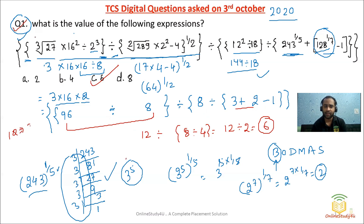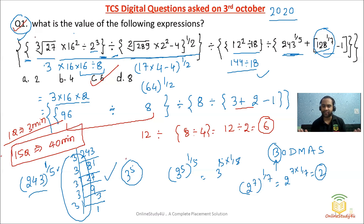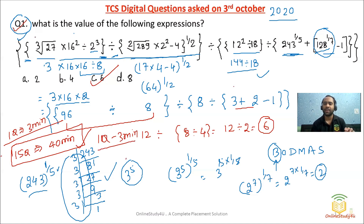In TCS Digital, for one question you get almost three minutes. There are 15 questions from aptitude and you get 40 minutes to solve them. The time is sufficient and the question level is very easy, as I've shown. The question wasn't that lengthy once you understand the basics.